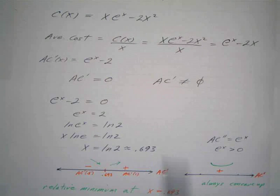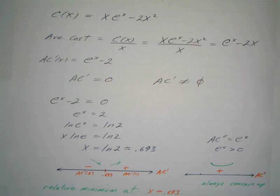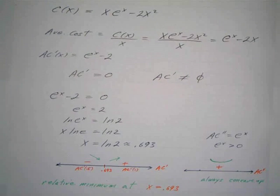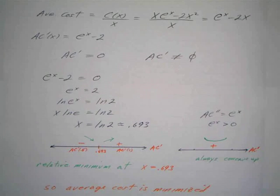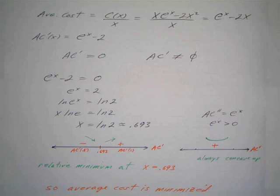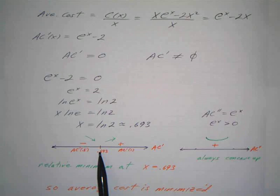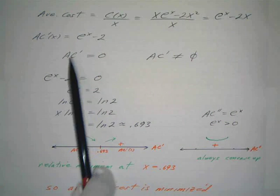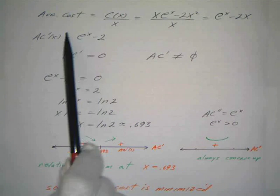Now there's a couple ways to do this next section. I kind of did it the first derivative test way, but I realized later it'd be pretty easy to use the second derivative test. So I've got 0.693, but if we look at the second derivative—what's the derivative of this?